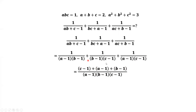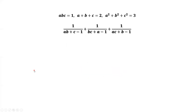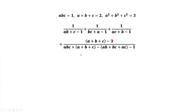Continue to simplify. The numerator becomes C minus 1 plus A minus 1 plus B minus 1, which is A plus B plus C minus 3. We also expand the denominator: A times B times C plus A plus B plus C minus AB plus BC plus AC, minus 1.